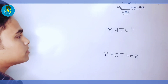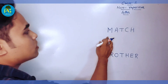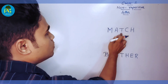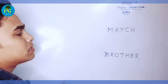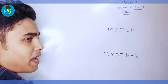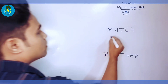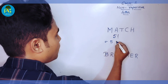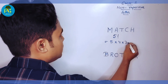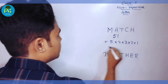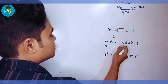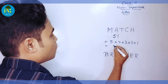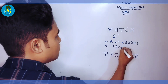The first word is MATCH. Here you count how many letters there are — there are 5 letters. How many ways can we write this word MATCH? 5 factorial, which is equal to 5 × 4 × 3 × 2 × 1 = 120.